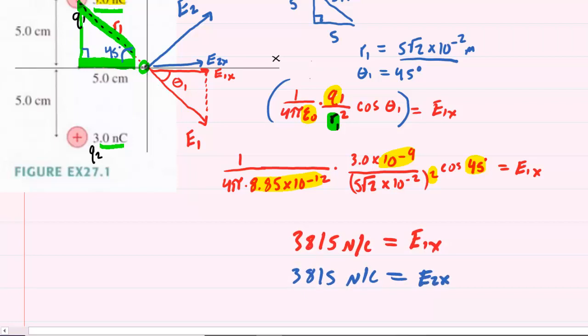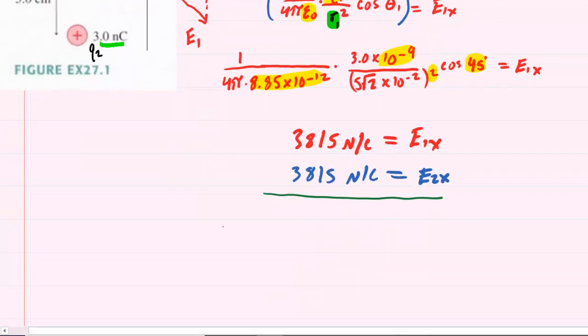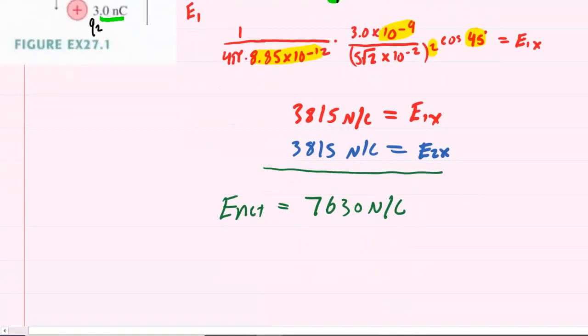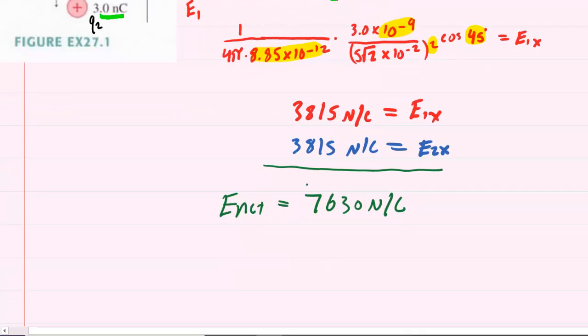Remember, the y-component is already cancelled out, so we don't have to worry about those. And therefore, the net electric field will be obtained simply by adding these two values together. And so, when you do that, you're going to get about 7,630 newtons per coulomb. And then, as far as the direction is concerned, both vectors were pointing in the positive x-direction. And therefore, the net electric field will point in the positive x-direction, which we can symbolize by i-hat.